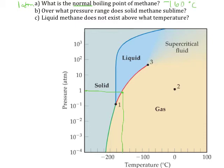The next question is: over which pressure range does solid methane sublime? Sublimation is when you go directly from a solid to a gas. We're looking for where there's a transition directly from solid to gas. That transition occurs anywhere on this line here, where there's direct contact between these phases. In order to get to that portion, you need to have a pressure that is below 10 to the negative 1, so below 0.1 atmosphere.